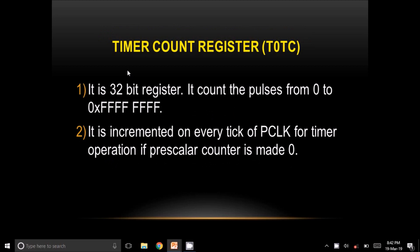Now let's discuss the Timer Count Register T0TC. It is a 32-bit register. It can count values from 0 to 0xFFFFFFFF. Its value increases after every tick of the peripheral clock or every tick of an external source, assuming the pre-scaler value is 0.